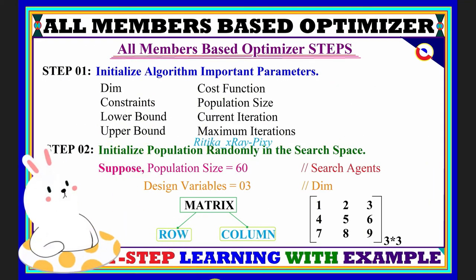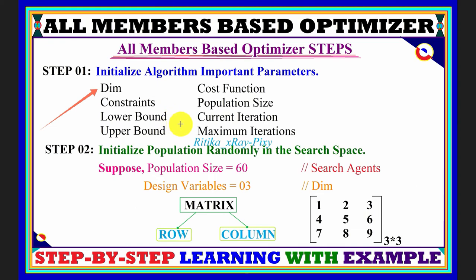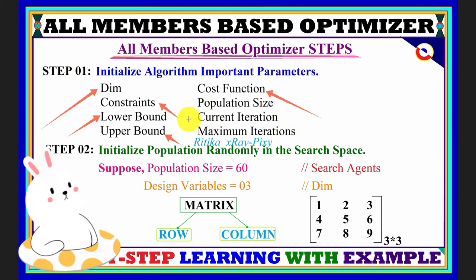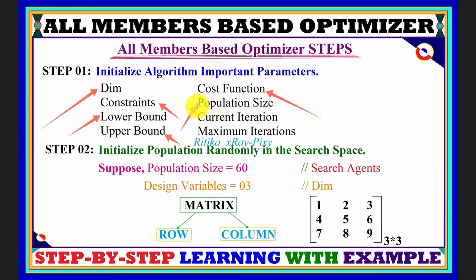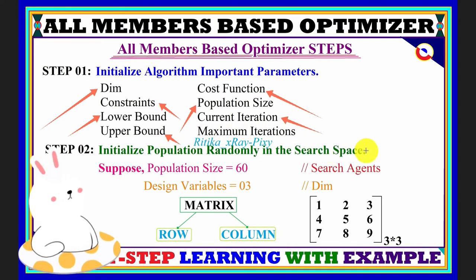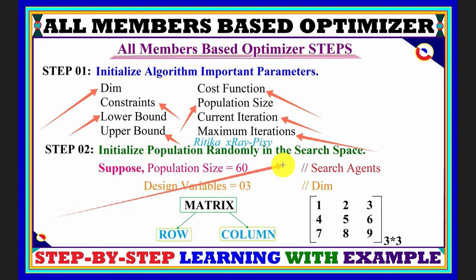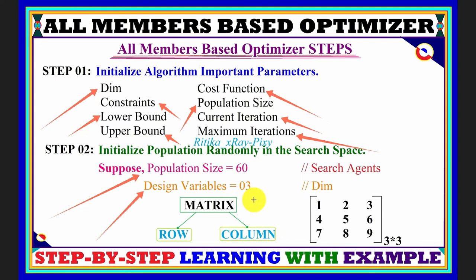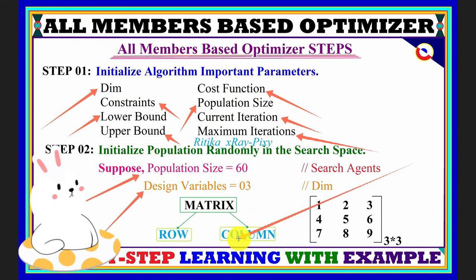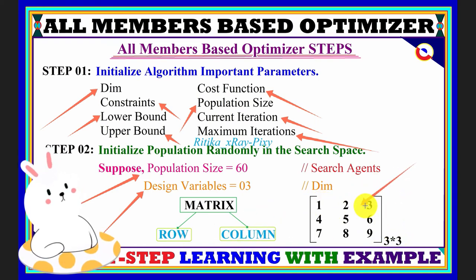First, we initialize all important parameters: dimension (also known as design variables), constraints (problem constraints), search space boundary (lower bound and upper bound), cost function (the fitness function used for population evaluation), population size (total number of search agents), current iteration, and maximum iteration (how many times the loop will repeat). We then initialize the population randomly in the search space. Suppose we have 60 search agents and 3 design variables — this gives us a 60×3 population matrix.